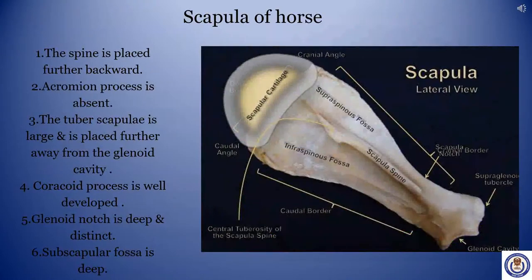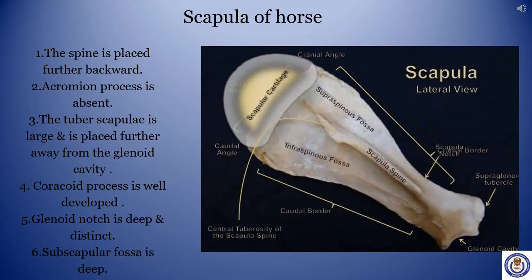Scapula of horse. The spine is placed further backward. Acromion process is absent. The tubus capillae is large and is placed further away from the glenoid cavity. Coracoid process is well developed. Glenoid notch is deep and distinct. Subscapular fossa is deep.